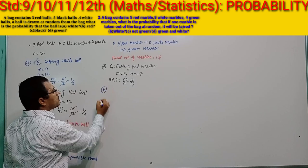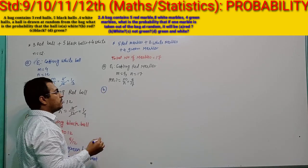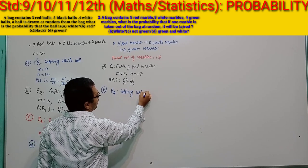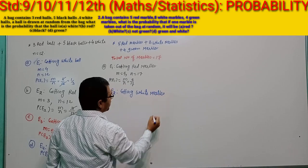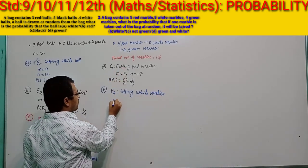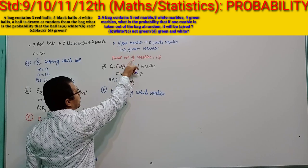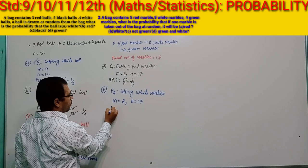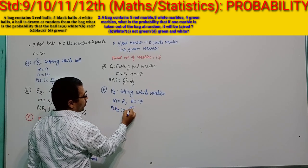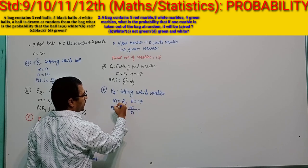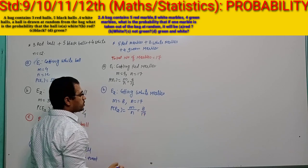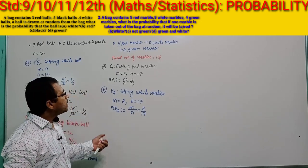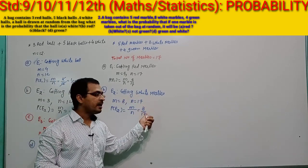B part: E2 = getting white marble. From the data, number of white marbles M = 8, and total number of outcomes N = 17. According to the empirical formula of probability, P of E2 = M by N = 8 by 17. The probability of getting a white marble is 8 by 17.